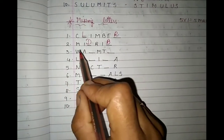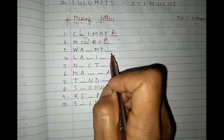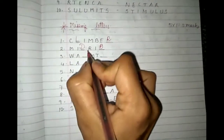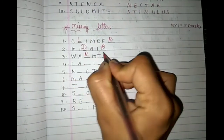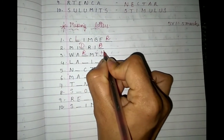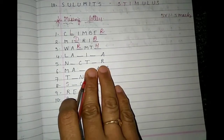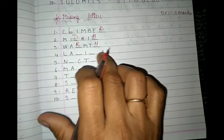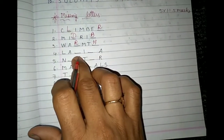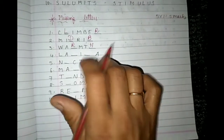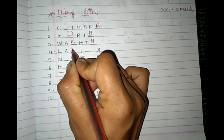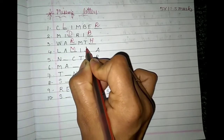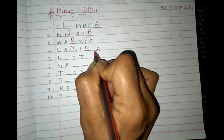Third missing letter: W-A-dash-M-T-dash. Very easy: W-A-R-M-T-H. Warmth. Fourth one: L-A-dash-I-dash-A. What can it be? L-A-M-I-N-A. Lamina. We just talked about midrib and now lamina has appeared — both are related parts of a leaf.